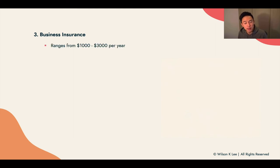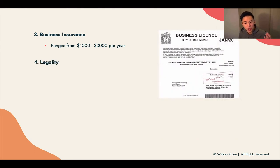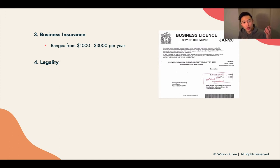Next up: business insurance, which is very much needed. What if you get sued? You don't want to be sued without insurance to back you up. For us, it ranges from $1,000 to $3,000 a year. Definitely go and talk to an insurance broker and ask what insurances you would need for a home food business. I'm not providing legal advice — I'm just sharing what we purchase and recommend. You need to consult with your city officials as well.